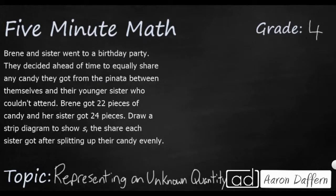So in our new problem, Brene and her sister are going to a birthday party. They're deciding ahead of time to equally share any candy. So equal shares, that means we're going to do some division here. With their younger sister, who couldn't attend. So Brene gets 22, her sister gets 24.